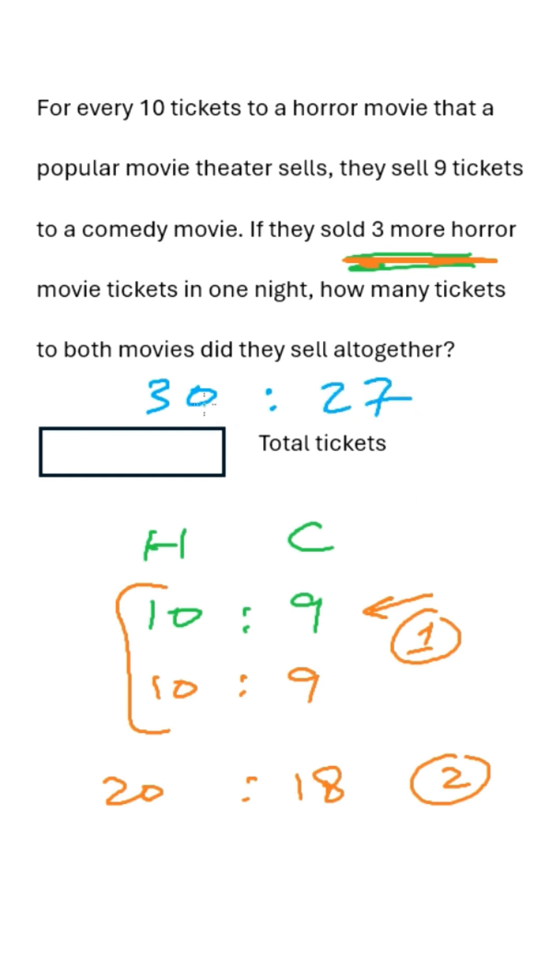10 more will give us 30 horror movies and 27 comedy movies. Now the difference is 3. 30 minus 27 is 3. So the total number of movies they have to sell to make the difference 3 is 30 plus 27, that is 57. That is your answer. 57 you write in this box.